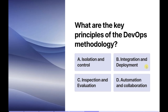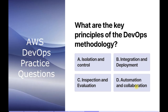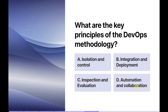In this question they are asking: what are the key principles of DevOps methodology? The options are: isolation and control, integration and deployment, inspection and evaluation, and automation and collaboration. DevOps emphasizes automation throughout the software development and deployment process. DevOps also encourages close collaboration and communication between development, operations, and other relevant teams to help deliver projects or applications more effectively.